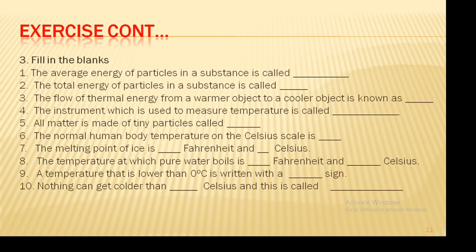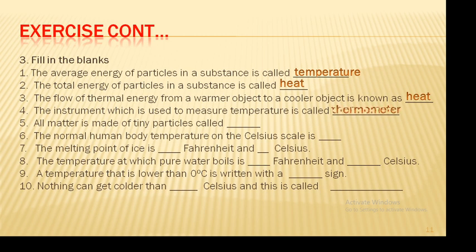Number 3: Fill in the blanks. 1. The average energy of particles in a substance is called temperature. 2. The total energy of particles in a substance is called heat. 3. The flow of thermal energy from a warmer object to a cooler object is known as heat. 4. The instrument used to measure temperature is called a thermometer. 5. All matter is made up of tiny particles called atoms. 6. The normal human body temperature on the Celsius scale is 37 degrees Celsius. 7. The melting point of ice is 32 degrees Fahrenheit and 0 degrees Celsius. 8. The temperature at which pure water boils is 212 degrees Fahrenheit and 100 degrees Celsius.